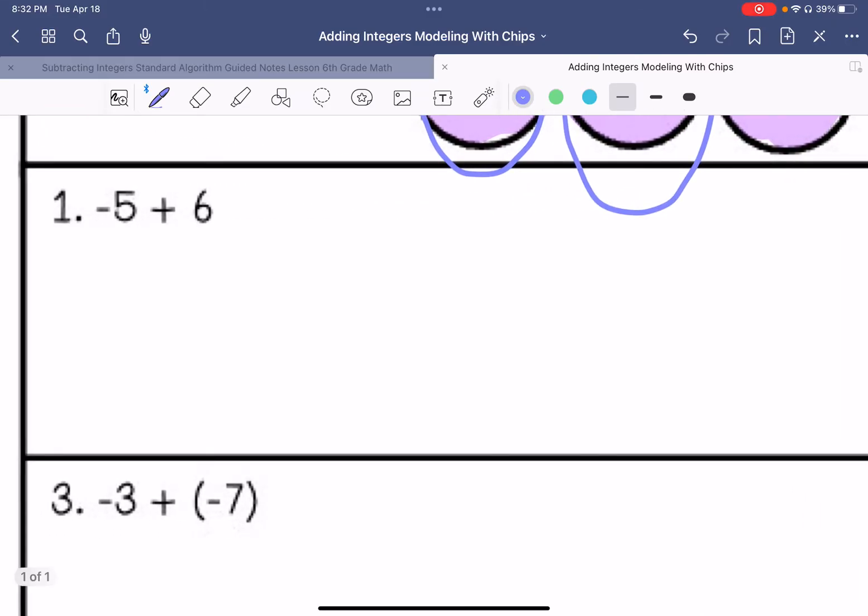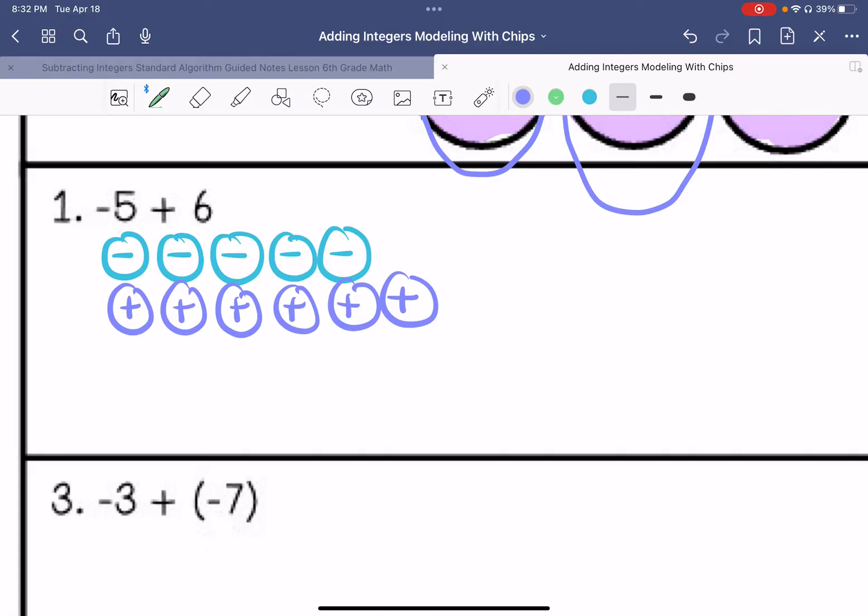We are going to draw our own chip model. So we have five negatives and six positives, and we see our zero pairs. And so all we have left is a positive one.